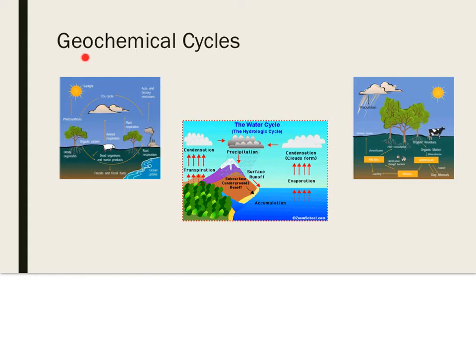Let's look at these geochemical cycles. Living organisms need certain substances in order to survive. Oxygen, carbon, water, and nitrogen are some of the essential substances that living organisms need. These substances are cycled through geochemical cycles, including the carbon-oxygen cycle, the water cycle, and the nitrogen cycle. Humans depend on geochemical cycles to provide clean water, breathable air, and soil capable of supporting crops, and human activities can affect these cycles.